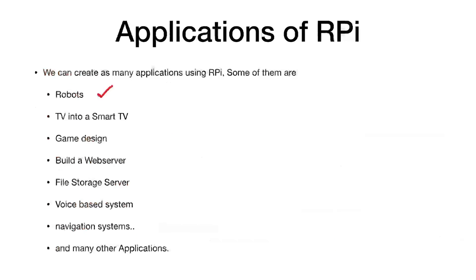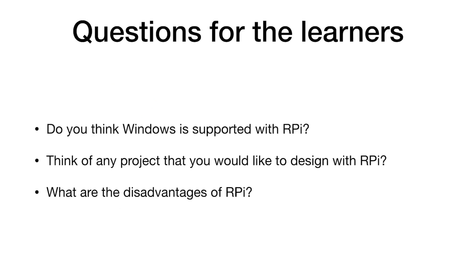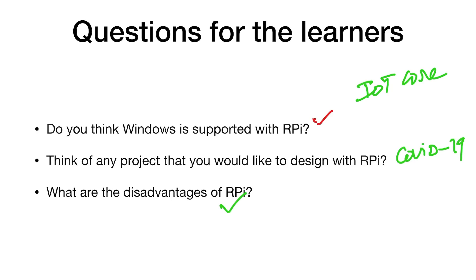Other operating systems like Ubuntu, Fedora, and Mint can also be used on Raspberry Pi. Applications include designing robots, converting a conventional TV into a smart TV, game design, web server, file storage, voice-based systems, navigation, and 3D printing. Questions for learners: Does Windows support Raspberry Pi? Check Windows IoT Core. Think of a COVID-19 project using Raspberry Pi, and consider what the disadvantages of Raspberry Pi might be.